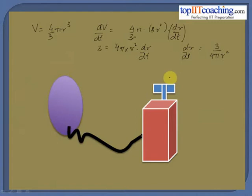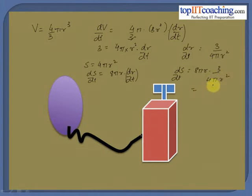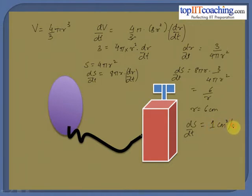Now we have to calculate the change in surface area of the balloon. Surface area S equals 4π r². Differentiating with respect to time, ds/dt equals 8π r times dr/dt. Substituting dr/dt equals 3/(4π r²), we get ds/dt equals 8π r times 3/(4π r²), which equals 6/r. Given that r equals 6 centimeters, ds/dt equals 1 centimeter square per second. Thus the rate of change of surface area of the balloon is 1 centimeter square per second.